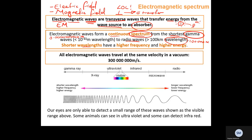Shorter wavelengths have a higher frequency and therefore higher energy — this is super important. All electromagnetic waves travel at the same velocity in a vacuum. Velocity is speed in a particular direction. All electromagnetic waves travel at 300,000,000 metres per second.